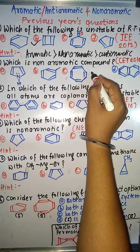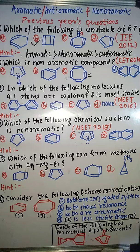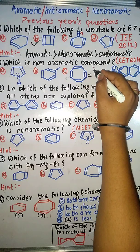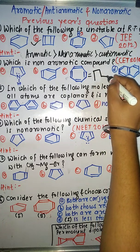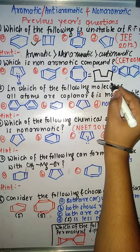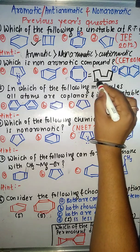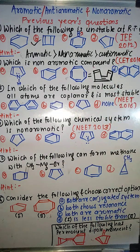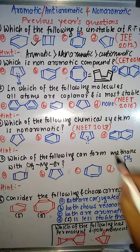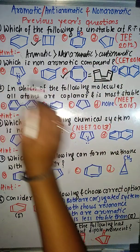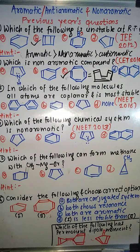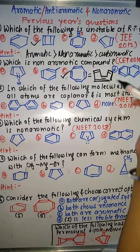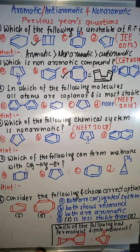But remember, there is an exception. One compound appears to be anti-aromatic, but in order to obtain stability, it adopts a tub shape, losing its planarity. It means it is cyclic and conjugated, but it is not planar. If it is not planar, then it is non-aromatic. So this compound appears anti-aromatic but is actually non-aromatic because it loses its planar shape.